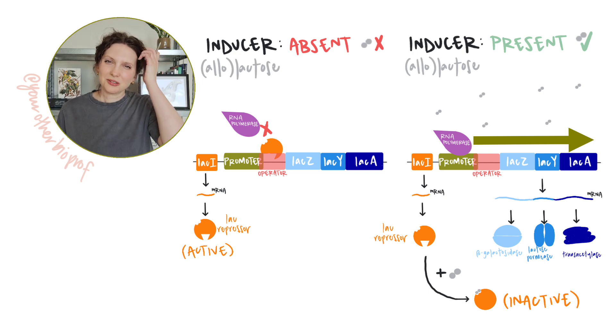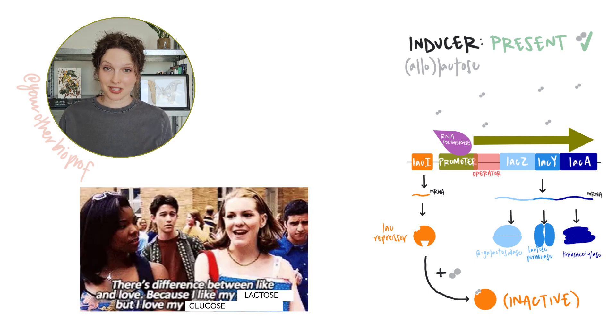But lactose isn't the only sugar that E. coli metabolizes. In fact, it's not even the favorite. When glucose is around, the cell prefers to use glucose as an energy source. It's more efficient.